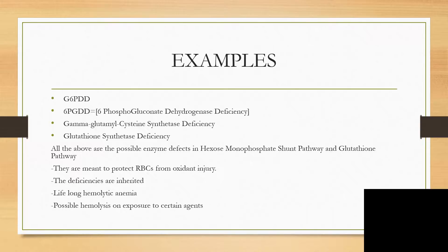These enzymes are meant to protect red blood cells from oxidant injury, but the deficiency can be inherited. Anyone with those deficiencies will have lifelong hemolytic anemia, and there is a possibility of hemolysis on exposure to certain agents — a list of which will be covered soon.